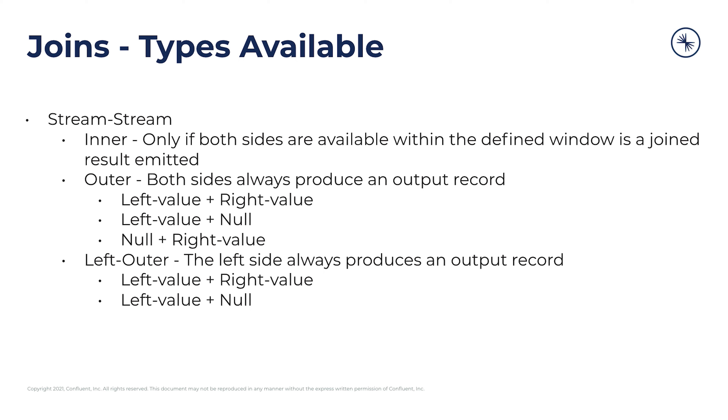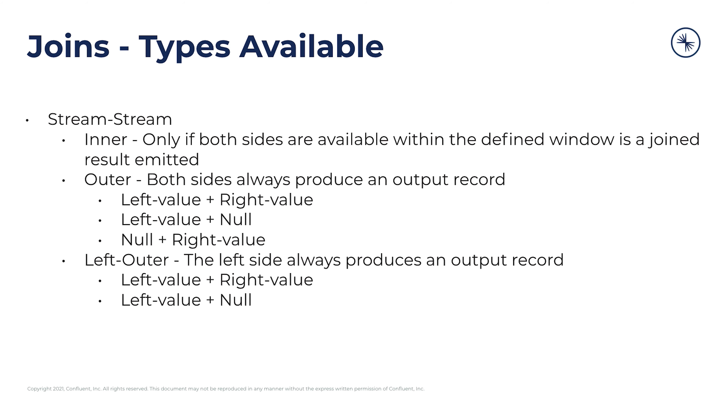An outer join is really the opposite, where both sides will always produce an output record no matter what is happening on the other side. If something comes in on the left side and there is already a record on the right side, these will be joined and output as usual. But if the left side produces a record and there is no matching record with that key on the right side, you're still going to get an output — it's just going to be the left value plus null. Likewise, if you get an input value on the right side and there's no matching record on the left, you get null plus the right value in your output record. You can decide which stream goes on the left and which stream goes on the right — that's just a matter of semantics that you define.